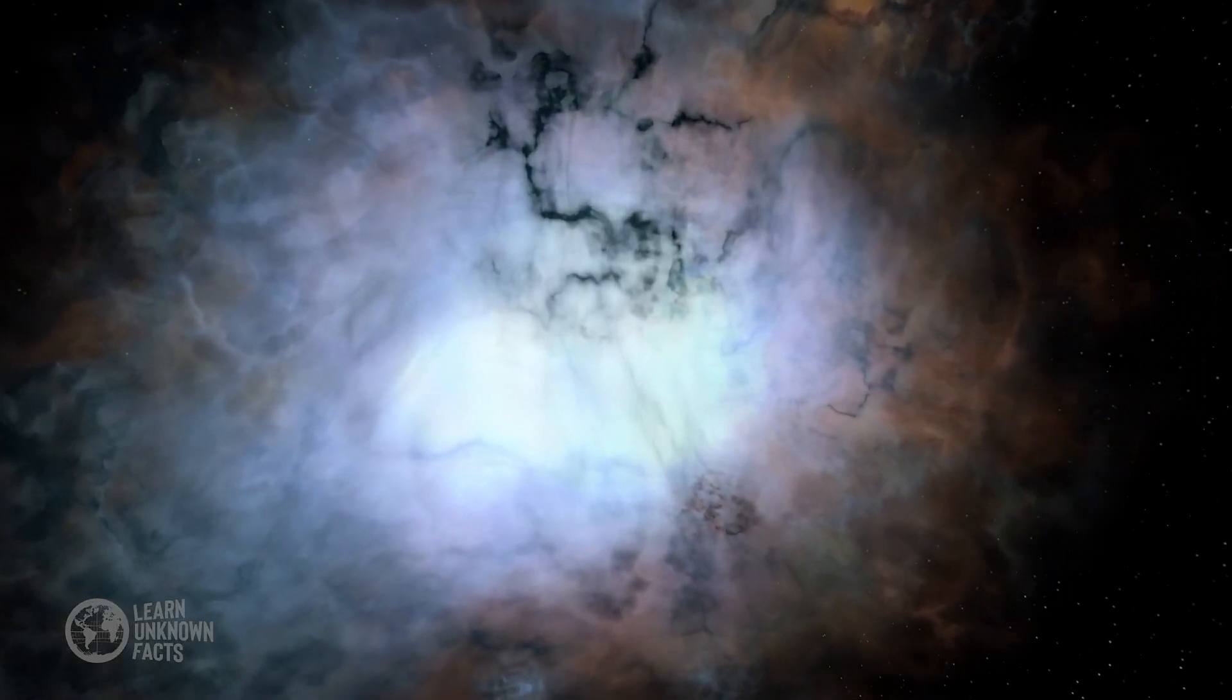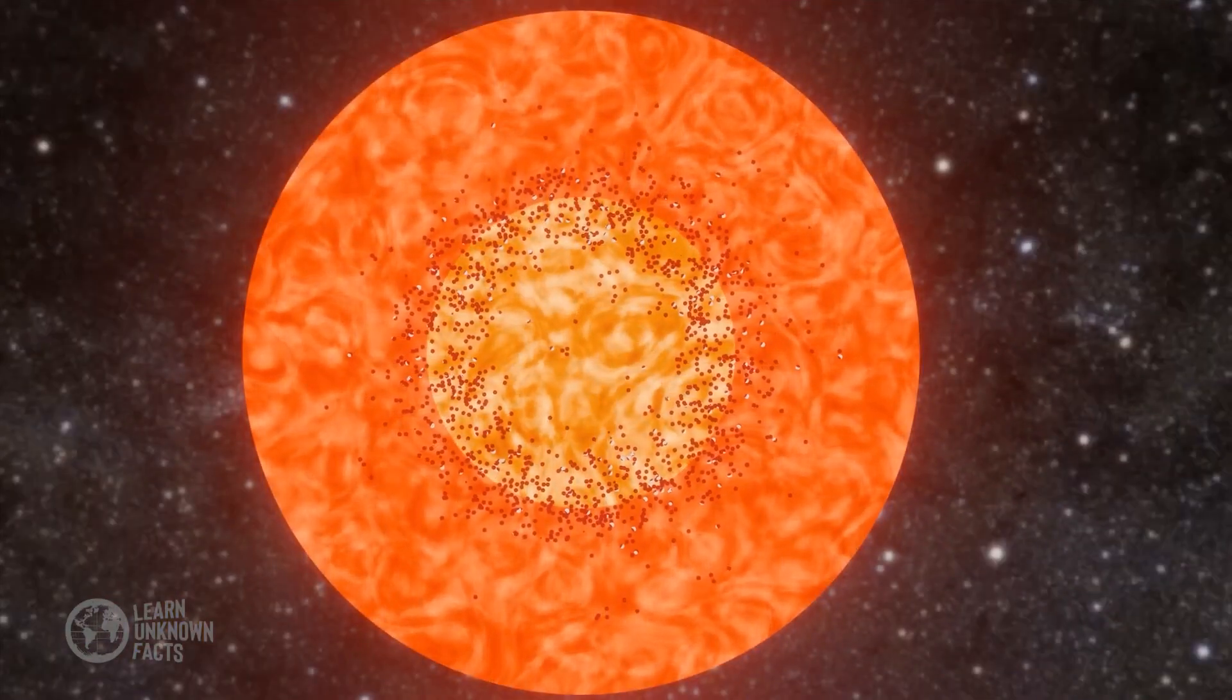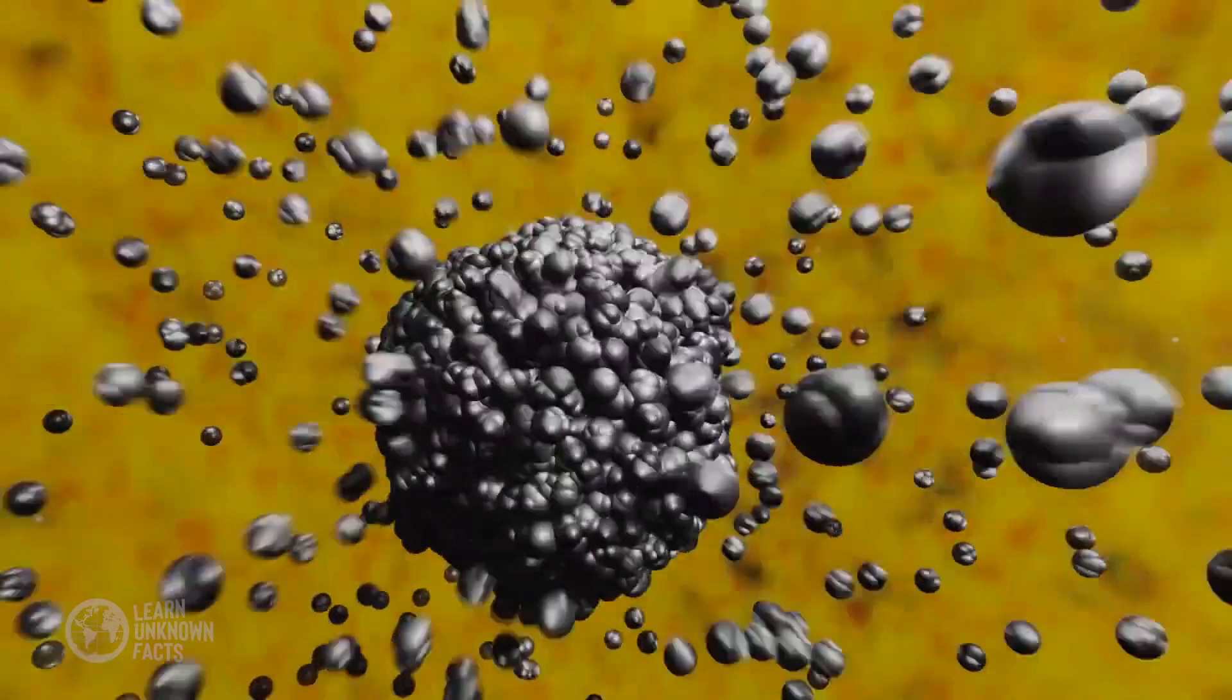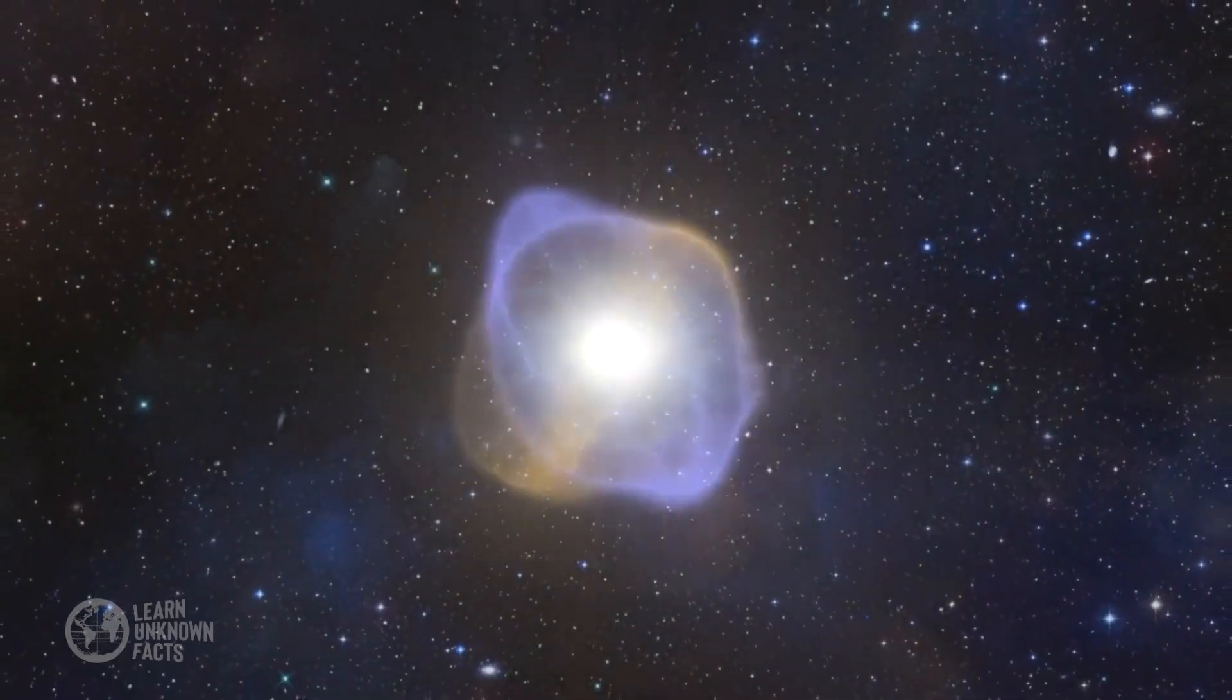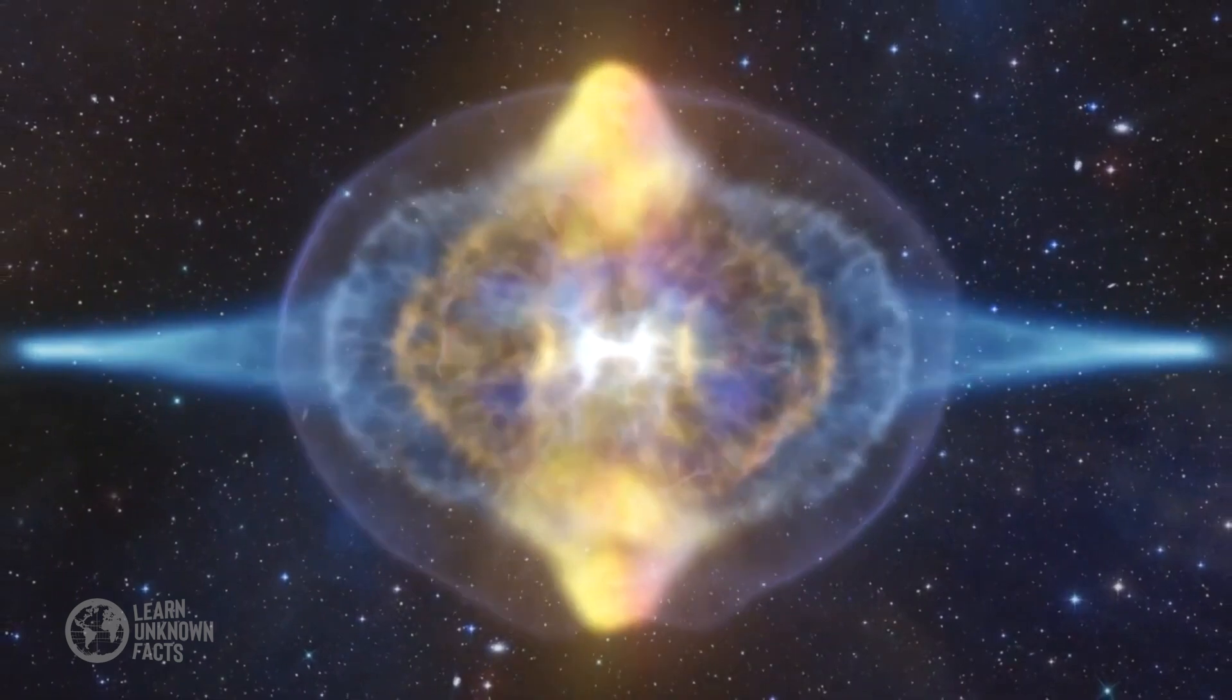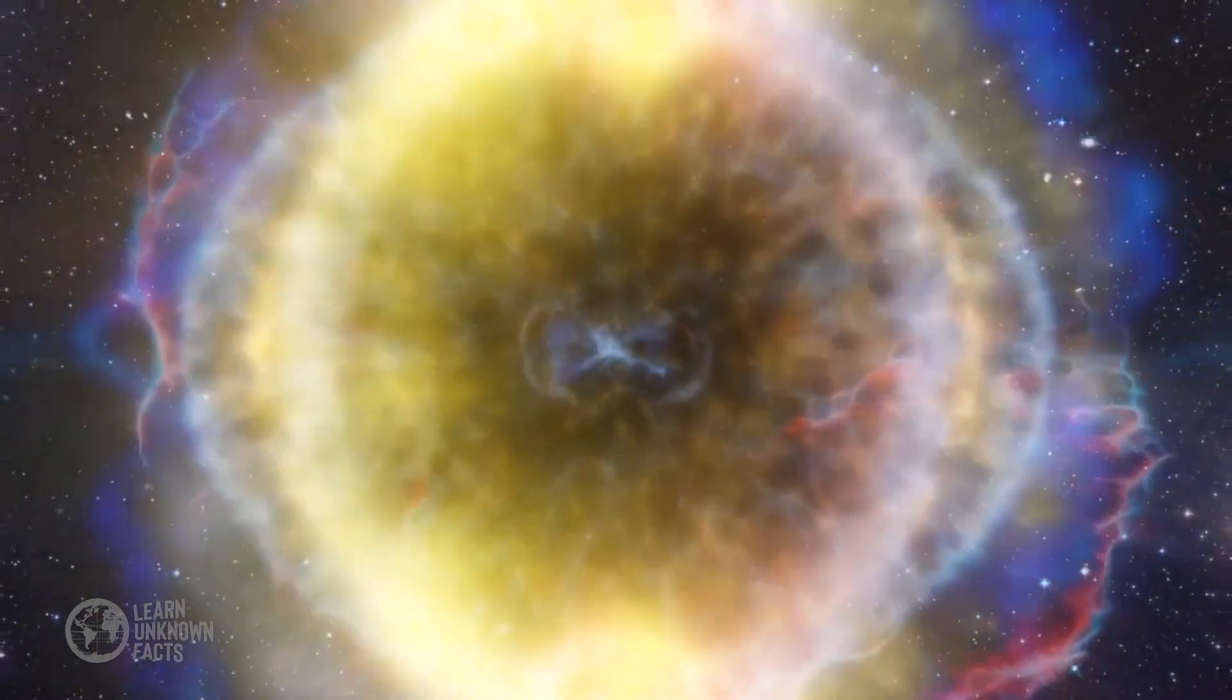In a type 2 supernova, as the core collapses, temperatures and pressures rise dramatically, triggering the fusion of heavier elements. This process creates an iron core, which cannot produce energy through fusion. Once the core reaches a critical mass, it collapses under its own gravity.